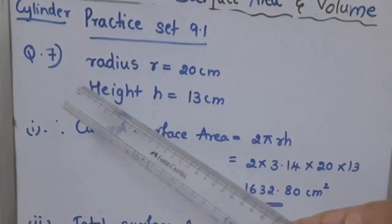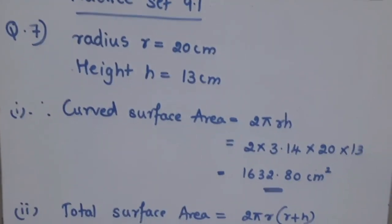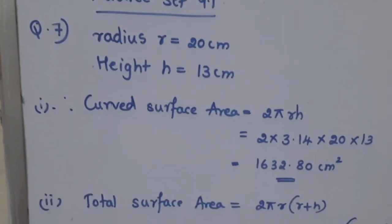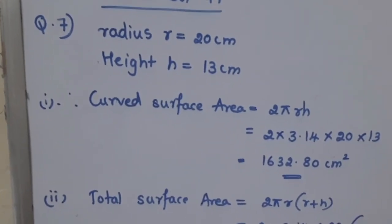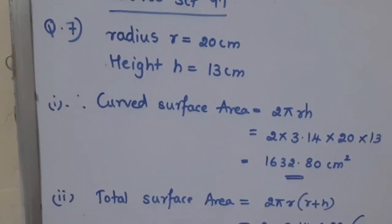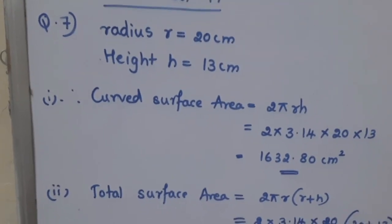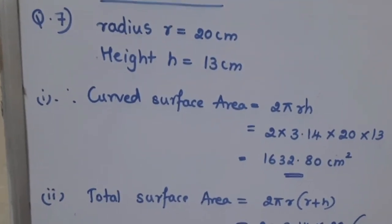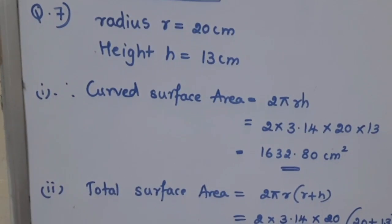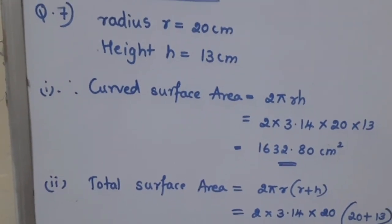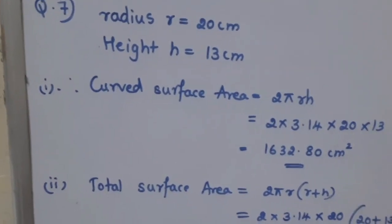We have practice set 9.1, Question No. 7. In this question, they have given radius of a cylinder is equal to 20cm and height of the same cylinder is equal to 13cm. Therefore, we have to find the curved surface area of that cylinder as well as total surface area of that cylinder.